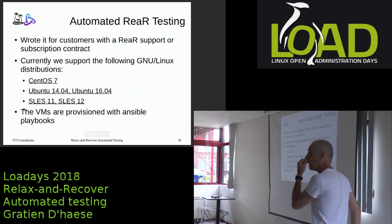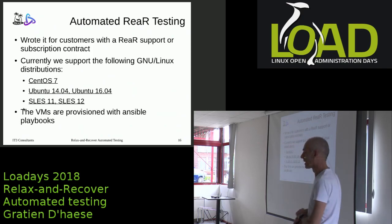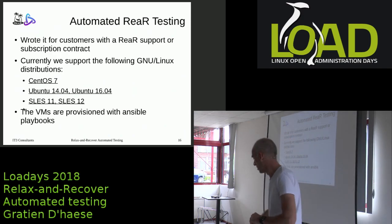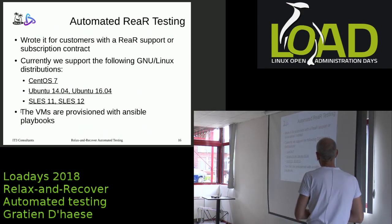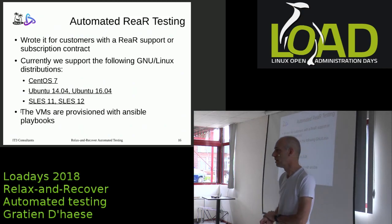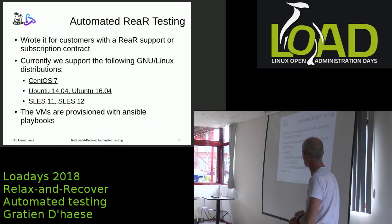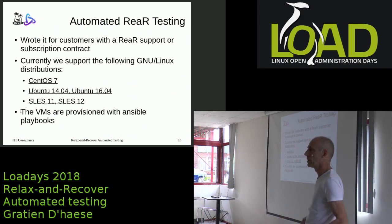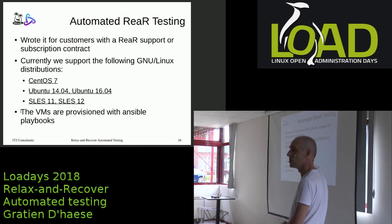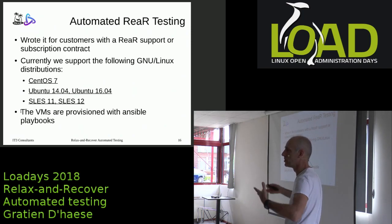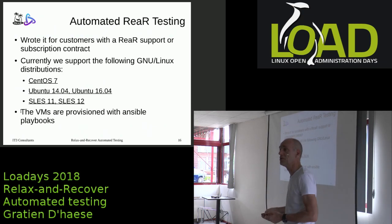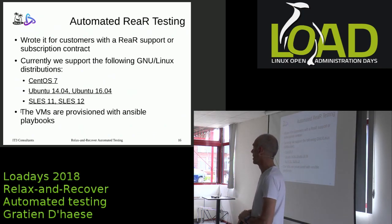Initially the project was written for customers with a subscription contract for ReaR, using CentOS 7 — that was the first supported one. Then about a year ago Ubuntu 14 and 16 were added, and last month SLES 11 and SLES 12 were also included. For SLES 11 I made a Vagrant box myself. I'm using Ansible to configure the client and the server before I can do anything with it — you have to install the Bareos client, set up the NFS server, and make a usable environment.